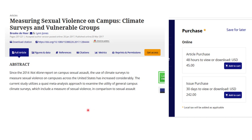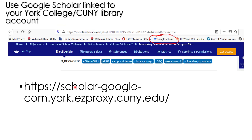But what happens when you click on some of these links is that you'll hit a paywall — a wall on the internet asking you to pay. You can rent this article for two days for $45, or $200 for 30 days, which is ridiculous, especially since you've probably already paid for it. So what you should do is use Google Scholar but also link it to the York College CUNY library account. Copy or bookmark this URL to your computer.